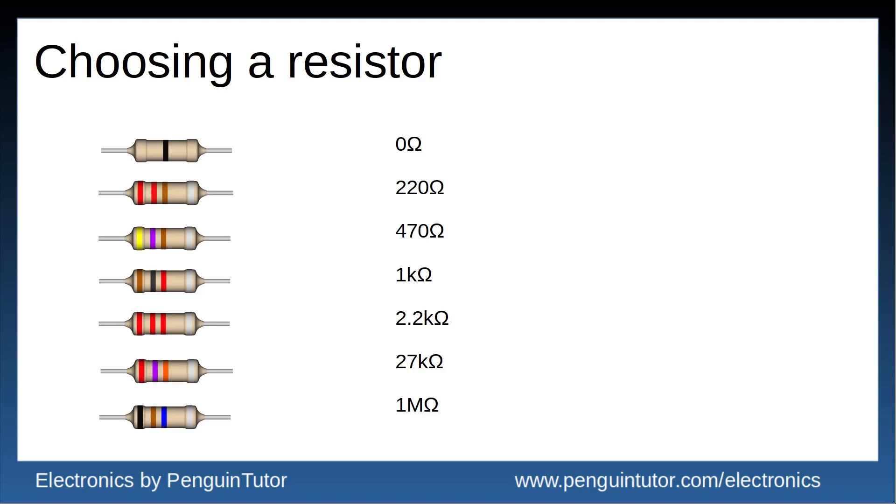Resistors are measured in ohms with the omega symbol. The value of the resistor can be as low as 0 ohms, essentially a wire in a resistor package, up to 100 mega ohms or even higher. Some common resistor values are shown here. On diagrams the resistor is often shown without the omega symbol and the letter R or unit prefix is placed instead of the decimal point.